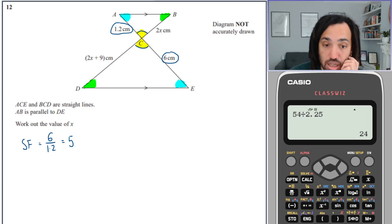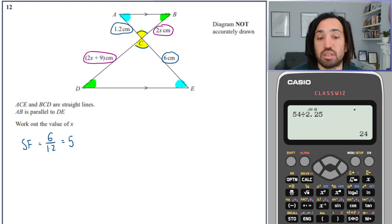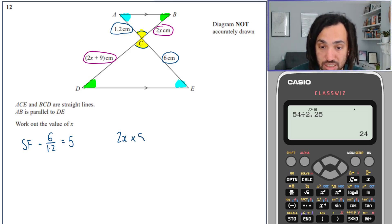Now I know that I can use the fact that these two are also similar, so this one and this one. Now I'll take the smaller one, which is 2x, and I'll multiply it by the scale factor, which is 5, and that should give me the larger one, which is 2x plus 9.